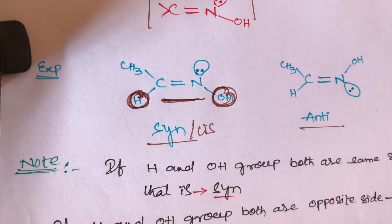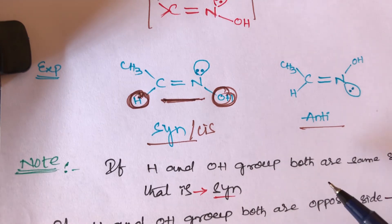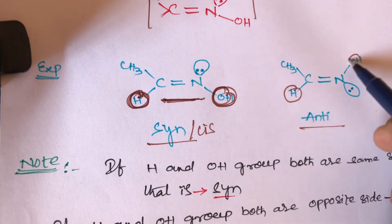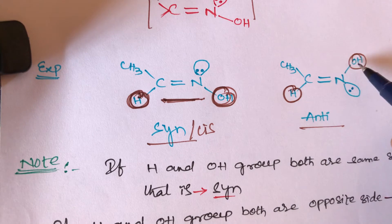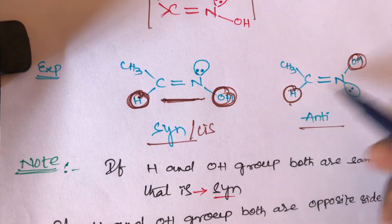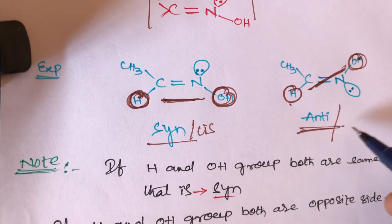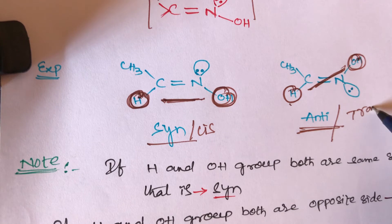If hydrogen and OH groups are on the opposite side, that is called anti-oxime, similar to trans. So: hydrogen and OH on the same side = syn (cis); hydrogen and OH on the opposite side = anti (trans).